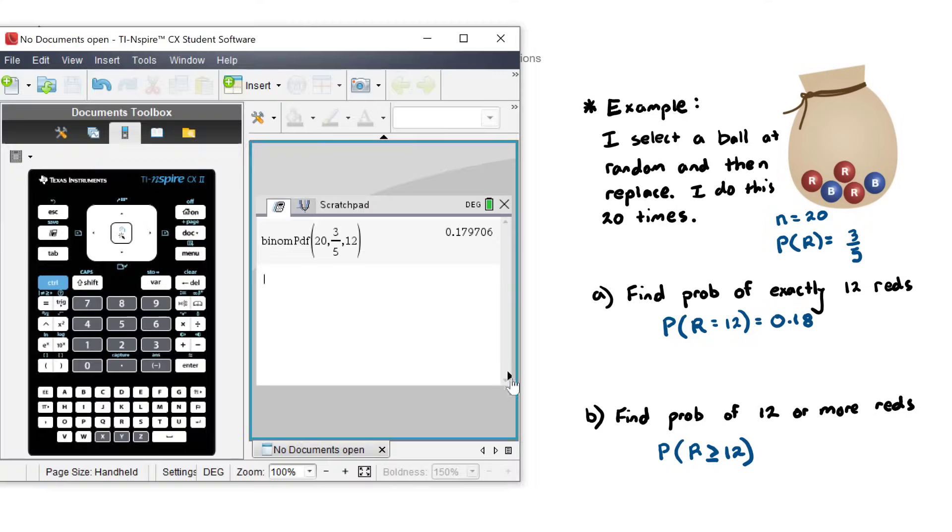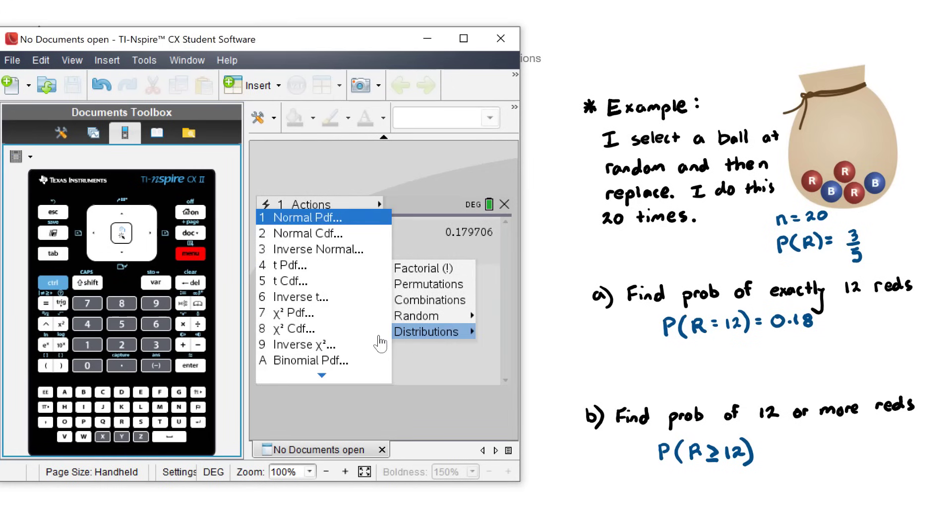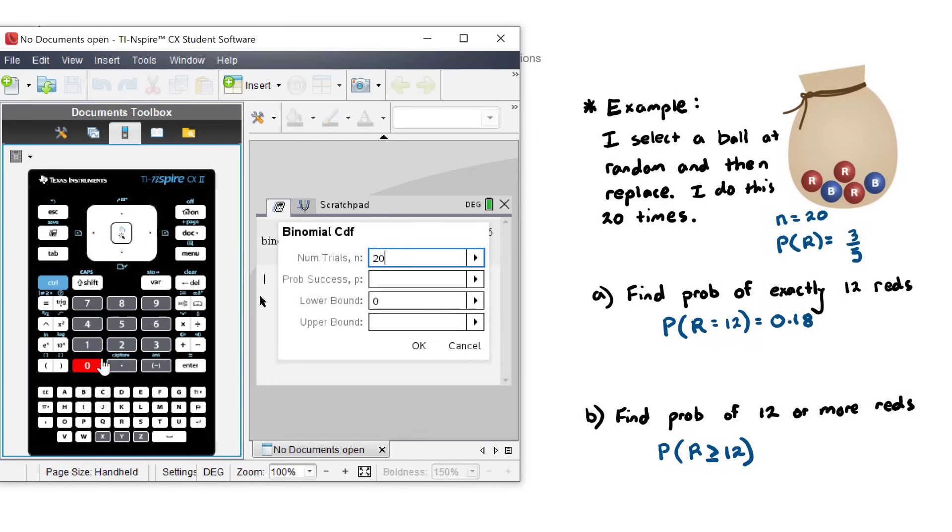Let's go ahead and find that. We go menu, probability, distributions, and we choose binomial CDF. Our number of trials, again, is still 20. Our probability of success is still three on five. But this time now, we need to enter a lower bound and an upper bound. So in our range between 12 and 20, our lower bound is going to be 12. And our upper bound is going to be the maximum number, 20.